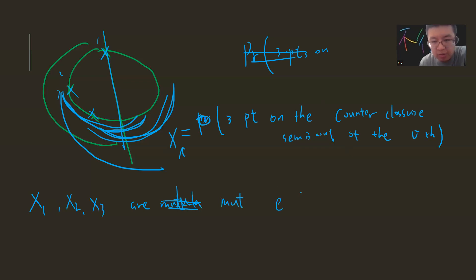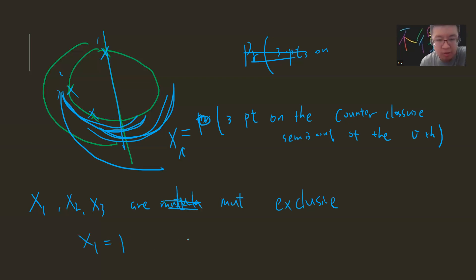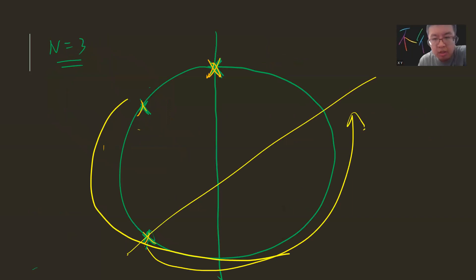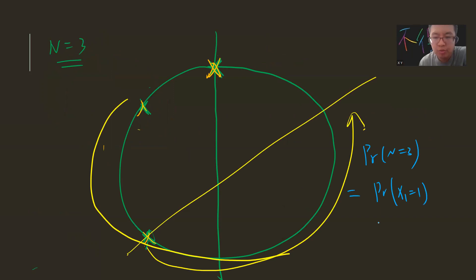So these events x1, x2, x3 are mutually exclusive. This means if x1 is 1, then x2 and x3 must be 0 — there's no way they can both exist. So the probability for n equal to 3 is just the sum: P(x1=1) plus P(x2=1) plus P(x3=1).